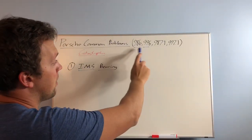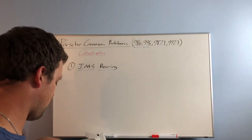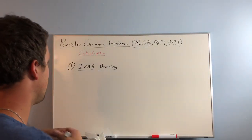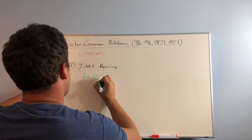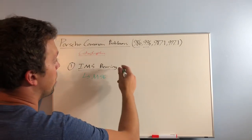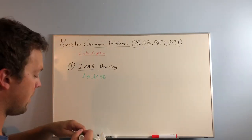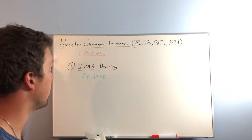There is an IMS bearing in every one of these cars, but the problem lies mostly with the M96 generation engine, which is the engine that was in the 986 and 996 Porsche vehicles.